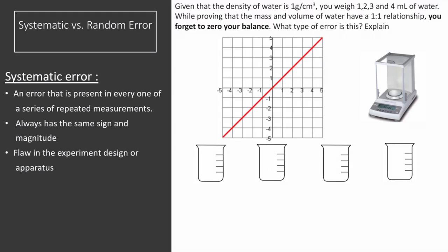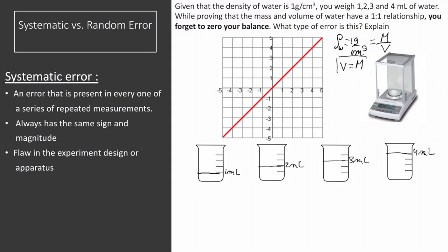Another example is forgetting to zero your balance. Let's see an example: we know that water has a density of 1 g per cm³. We measure the masses of 1, 2, 3, and 4 milliliters of water, and we are trying to prove that mass and volume have a 1-to-1 relationship. Since density equals mass over volume, multiplying both sides by volume gives us mass equals volume — a y equals x relationship, where y is mass and x is volume.